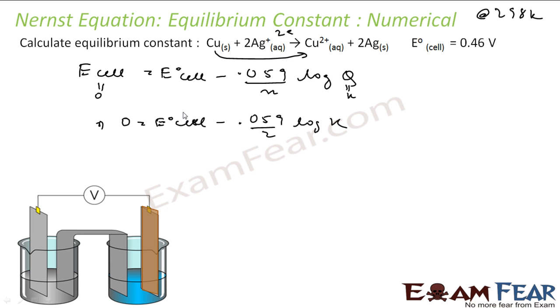Volt cancels. So if you solve, log of K is nothing but 0.46 into 2 by 0.059, that is nothing but 15.6. That means K equilibrium is nothing but 3.92 into 10 to the power 15, and that is my answer.